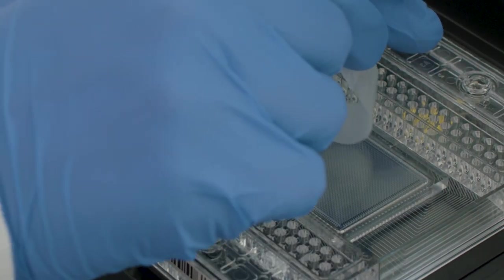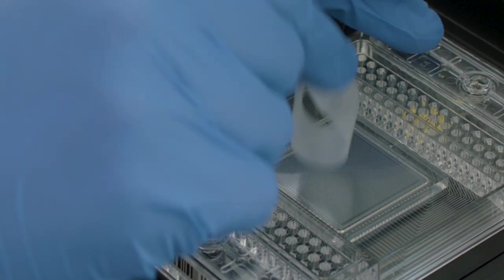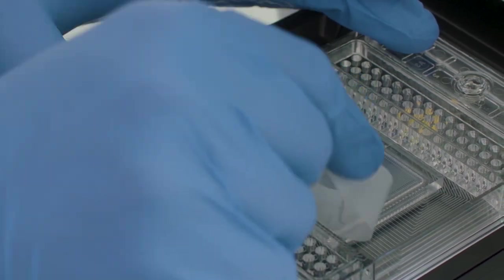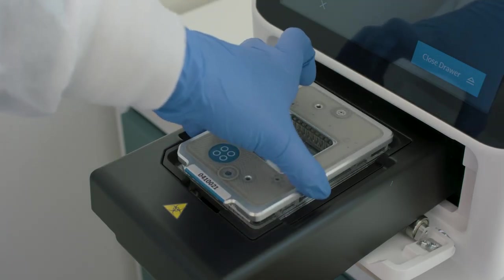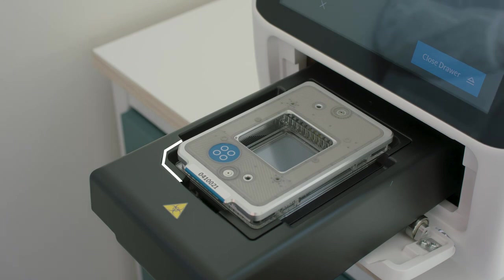Use clear tape to remove any dust particles or debris from the IFC surface if necessary. Place the interface plate over the IFC. Align the notched corner of the IFC with the notch on the drawer, and face the barcoded edges of the IFC and interface plate forward.